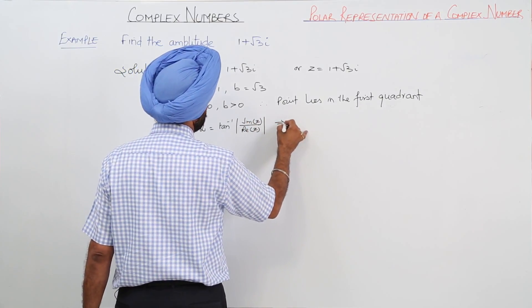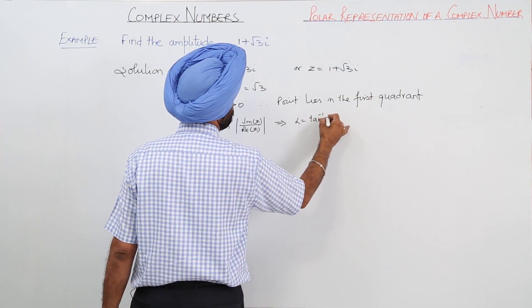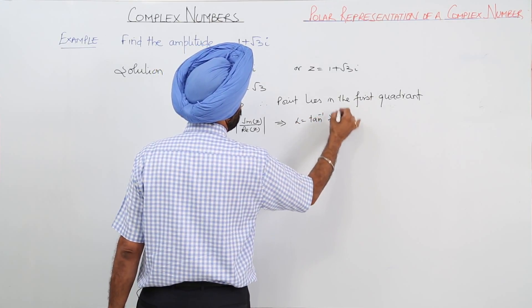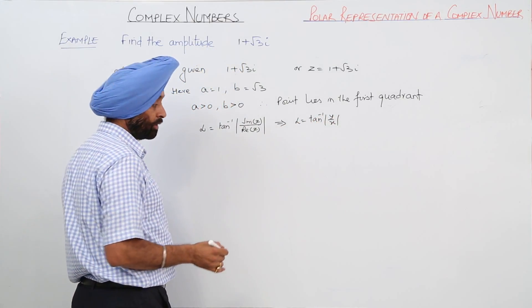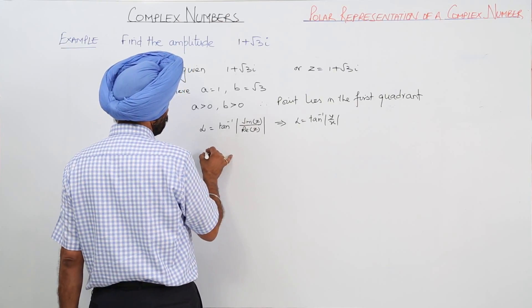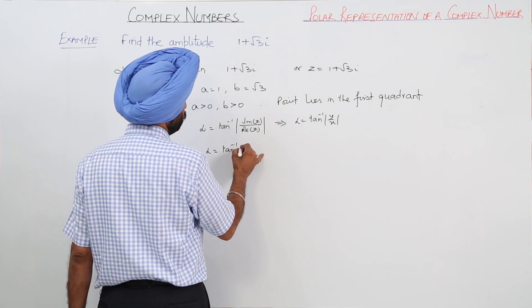Or we can write alpha equals tan inverse y upon x, and we are going to take positive only. So alpha equals tan inverse root 3.